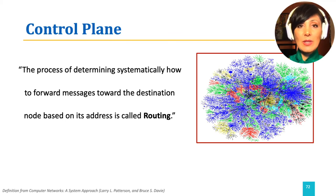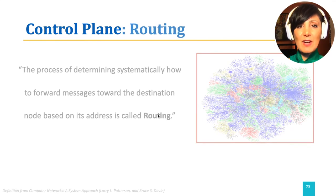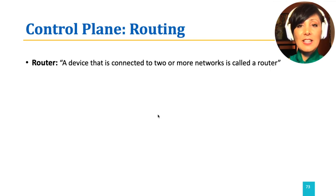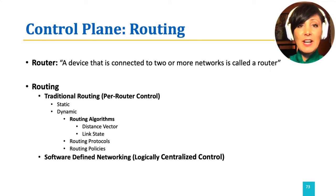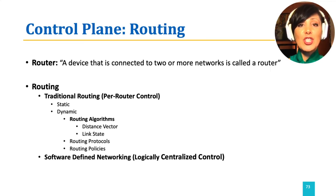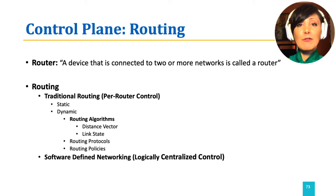What is routing? The process of determining systematically how to forward messages towards the destination node based on its address is called routing. A router is a device that is connected to two or more networks and delivers this functionality. Traditional routing is performed per router; software-defined networking performs routing in a logically centralized controller. In traditional routing, we can either have static routing — defining routes that do not change — or run algorithms that define them dynamically. Routing algorithms could be classified into two main categories: distance vector or link state.